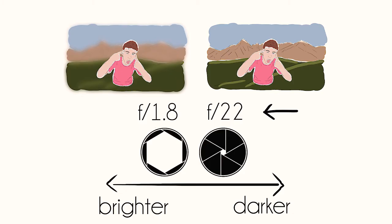A wider aperture like this is usually better for portraits because it makes the subject the only thing that's in focus. A smaller aperture is usually better for things like landscapes to get everything in focus.